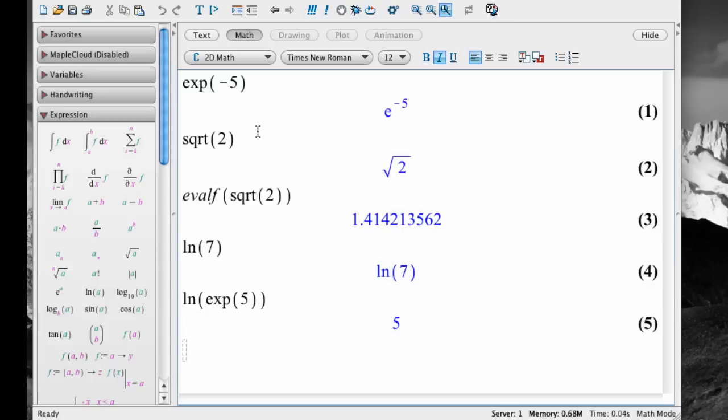To find a log to the base 10, use log10. For example, log base 10 of 0.01 is negative 2.